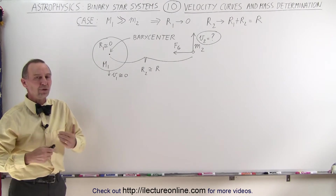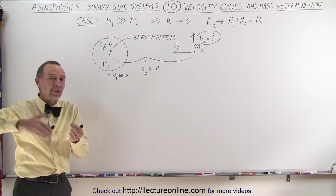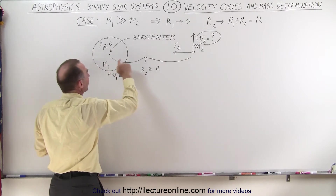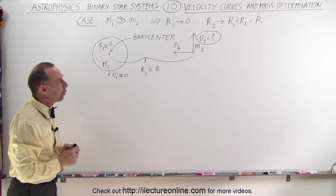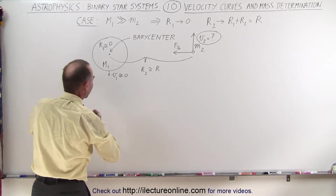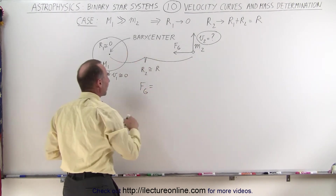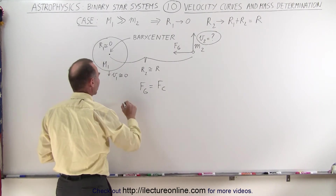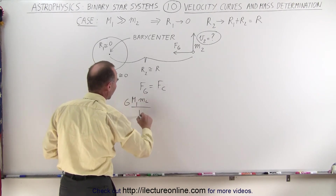The answer is yes, we can, by using Newton's law of gravity, and also realizing that for any object revolving around another object — in this case the small object does indeed revolve around the large object — since the barycenter is virtually in the same place as the center of mass of the large object, we can assume that the force of gravity equals the centripetal force. So we write that the force of gravity on the small object due to the pull of the big object must equal the centripetal force.